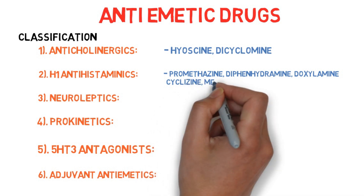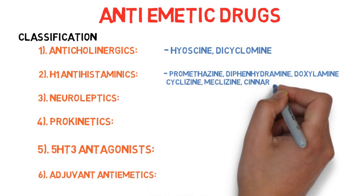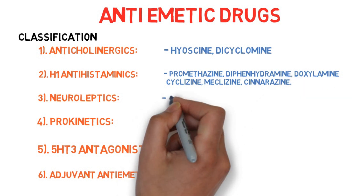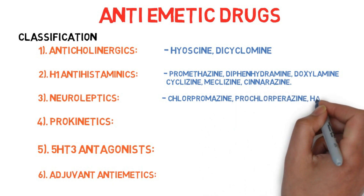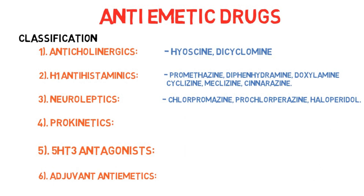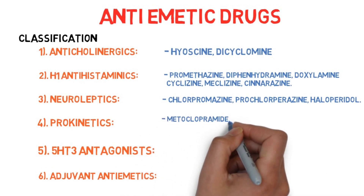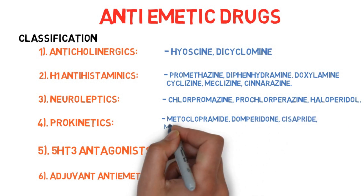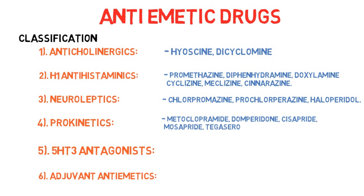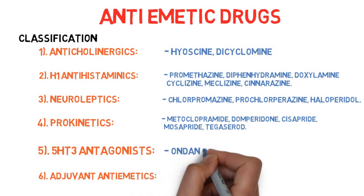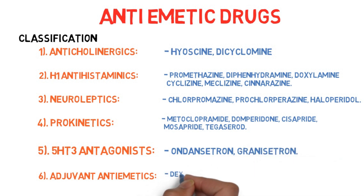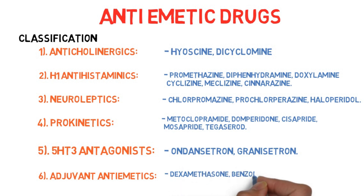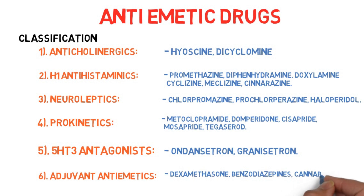Number 3, neuroleptics: the drugs are chlorpromazine, prochlorperazine, and haloperidol. Number 4, prokinetics: the drugs are metoclopramide, domperidone, cisapride, mosapride, and tegaserod. Number 5, 5-HT3 antagonists: ondansetron and granisetron. Number 6, adjuvant antiemetics: dexamethasone, benzodiazepines, and cannabinoids.